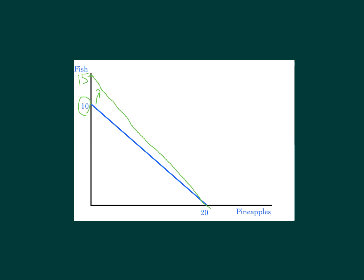That is what happens when you have an increase in technology. Another possibility is that your overall ability to produce everything has changed. Coming back to the original 10 fish and 20 pineapples — the blue line — what if you have a population increase so the total amount you can produce of both has grown? If production of pineapples also doubled to 40, you'd get a parallel shift of the whole PPF outward. That entire expansion in the ability to produce both fish and pineapples represents economic growth.